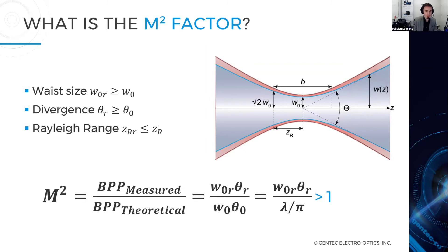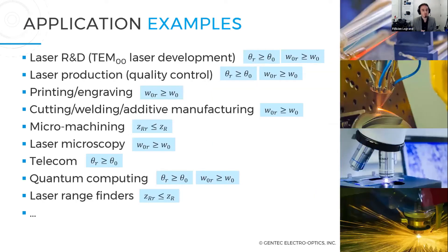A couple of examples where this is relevant. The blue rectangles are showing the quantities that are important for you to check. For example, printing, engraving, cutting, welding, additive manufacturing, where typically you will want your laser power density to be as high as possible at the given spot, exactly where you want your weld to be done or you're cutting your material. You will want the highest laser power density, so the beam waist has to be as small as possible.